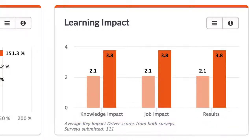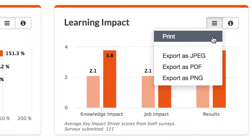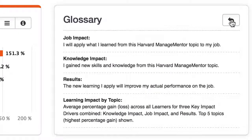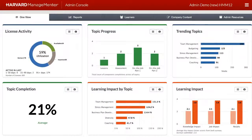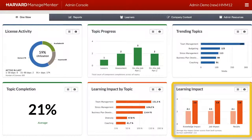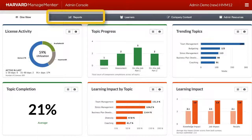Learning Impact measures are available to organizations leveraging the On-the-Job component of HMM. It's very easy to export any of the graphs to add to presentations or reports. Click on the menu icon to print or export the dashlet in the preferred format. The information icon displays a glossary for the metrics and terms related to each dashlet.